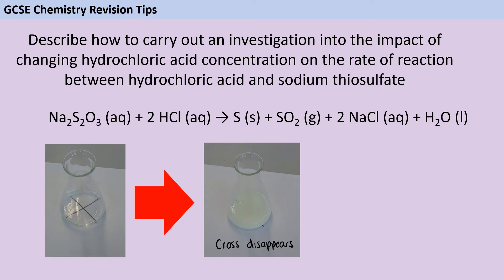Measuring changes in rate of reaction by looking at a change in turbidity is one of the named required practicals for the GCSE. AQA don't actually specify a particular chemical reaction — they just say it could be any reaction where we see turbidity. There are really only two options we can do at GCSE in school, so chances are you have done this exact investigation. Because it's not named in the specification, they will give you the symbol equation, and quite often they also give you a diagram to go alongside.